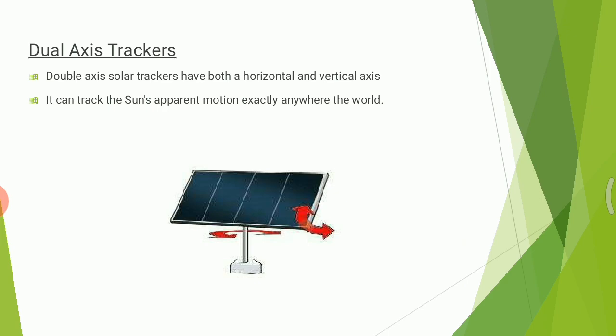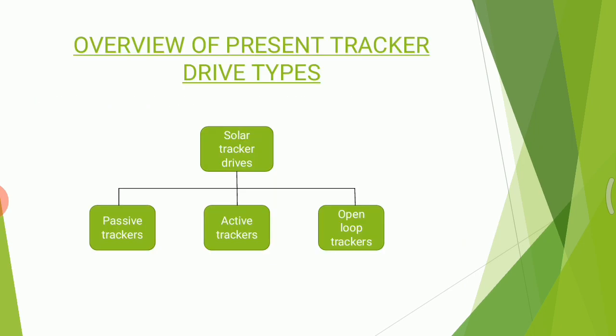In a double axis solar tracker, the panels can rotate in both horizontal and vertical axes. Double axis solar trackers allow your panels to move on two axes — both north-south and east-west. This type of system is designed to maximize solar energy collection throughout the year.